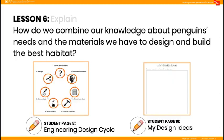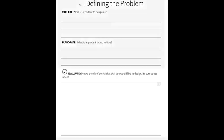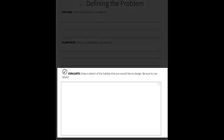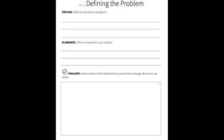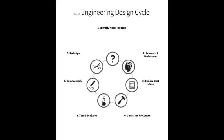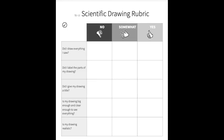In the Explore, direct students back to their original habitat sketch on student journal page 2. Discuss if they have learned anything new that gives them new ideas about their design. Review the engineering design cycle on student journal page 5, discussing completed steps and steps remaining. Then direct students to student journal page 3 to review what is required for a scientific drawing, and student journal page 19 to create a new revised sketch of their design, taking into account the criteria and constraints.